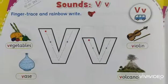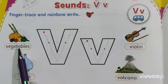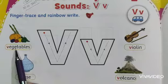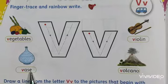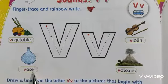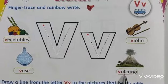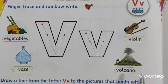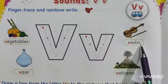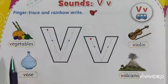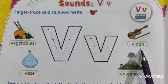First, you read the words with starting letter V. These are Vegetables — V-E-G-E-T-A-B-L-E-S. This is Vase — V-A-S-E. This is Volcano — V-O-L-C-A-N-O. And this is Violin — V-I-O-L-I-N. So, V for Vegetables, V for Vase, V for Volcano, and V for Violin.